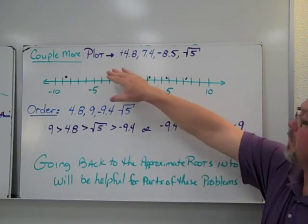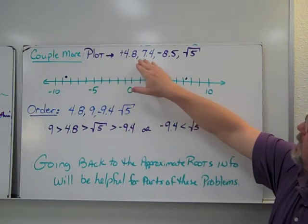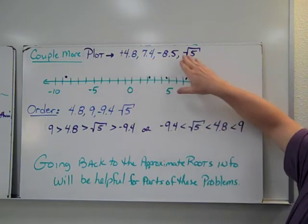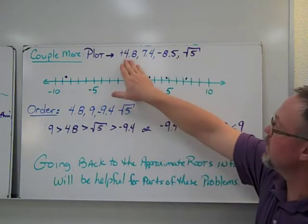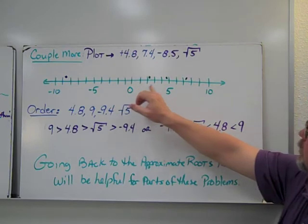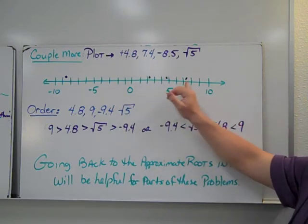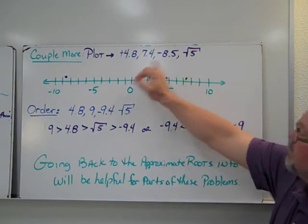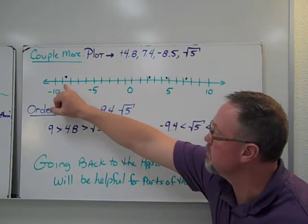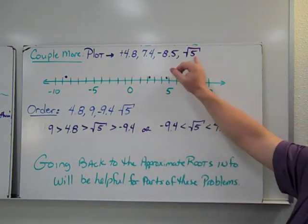So a couple more. If we plot it, 4.8, 7.4, negative 8.5, the square root of 5. So again, I'm going to plot 4.8. So I'm going to go over here. 4.8 is almost 5. 7.4 is almost in the middle. Negative 8.5, so I'm going to be on this side. So I'm going to be down here at 8.5.